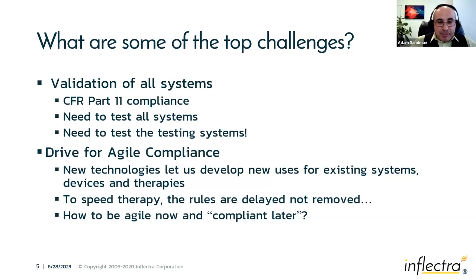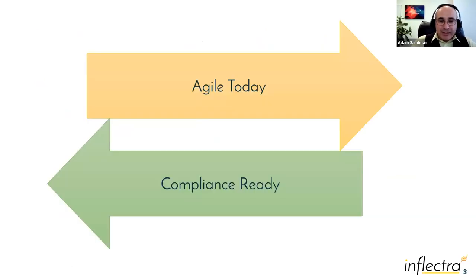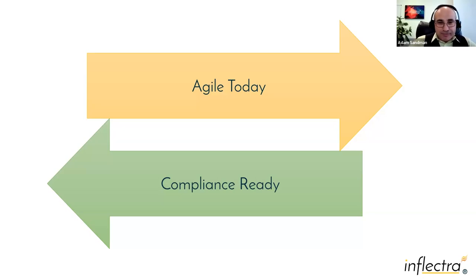Things are happening faster, so we need to deliver functionality quicker. But the rules are only delayed, not removed. We need to be agile — releasing functionality faster into the hands of patients and into trials — while maintaining compliance. The goal is to be innovative and do R&D in an efficient, timely way, but also have the necessary evidence in place so that when we face validation, audits, and so on, we are ready. At Inflectra, our Spira platform is developed using agile methodology with continuous integration and deployment, and we are fully compliant.